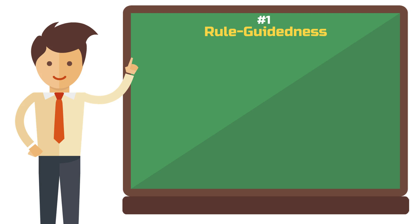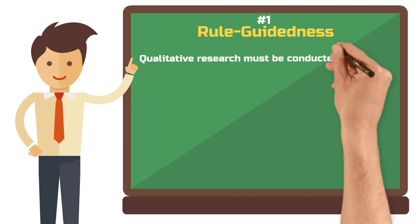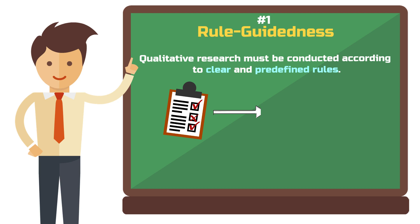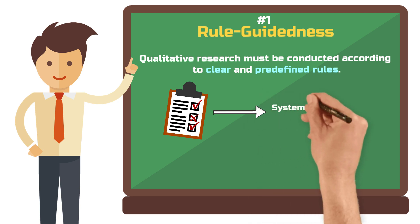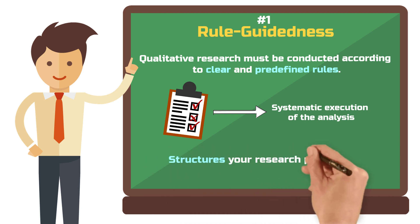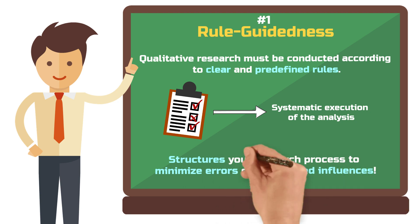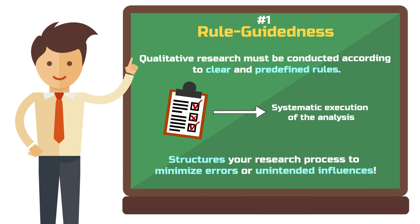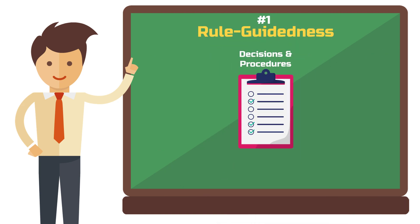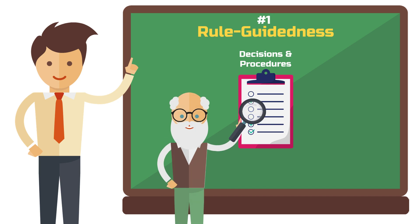Number one: rule guidedness. This criterion means that qualitative research must be conducted according to clear and predefined rules. You need to determine the procedure in advance so that you can systematically carry out your analysis based on these steps. Rule guidedness is important to ensure that the research process is structured and comprehensible. This helps minimize potential errors or biases. You need to document your decisions and procedures precisely so that other researchers can understand and verify the results.